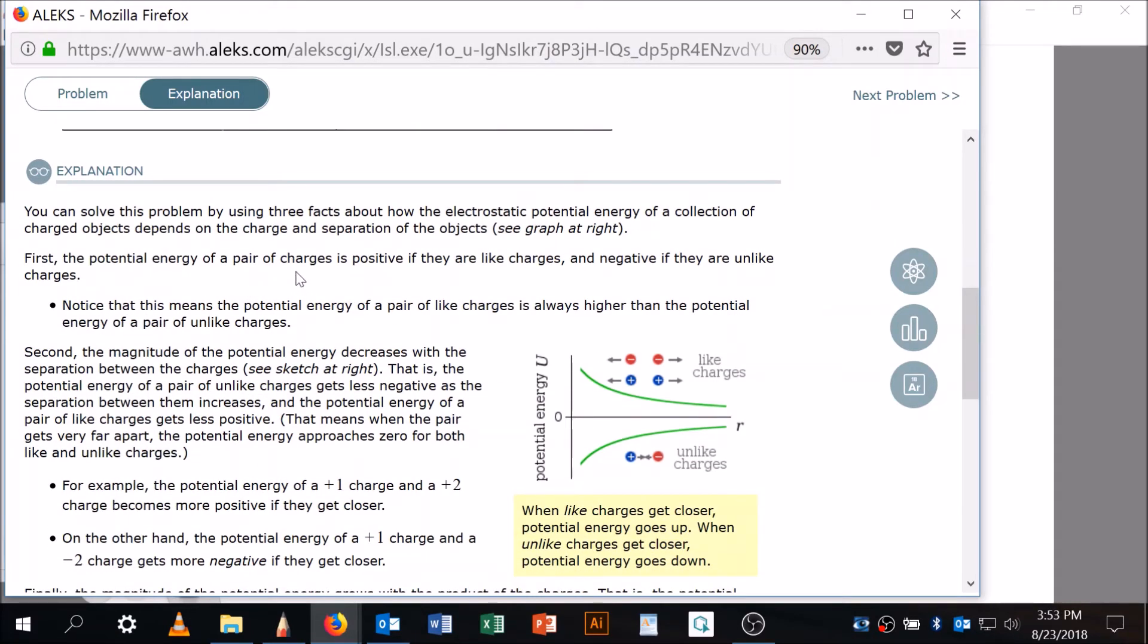First, the potential energy of a pair of charges is positive if they are like charges. So it's going to be up here. It's going to be high if they get close. That's what the green line is here. This is the graph. The energy, can you see this axis is labeled potential energy u? It's going to be high if the like charges are close. So if the distance between the two is low, it's going to be really high. They do not want to be close to each other. And as they get further away, it gets closer and closer to zero. So it gets lower and lower.